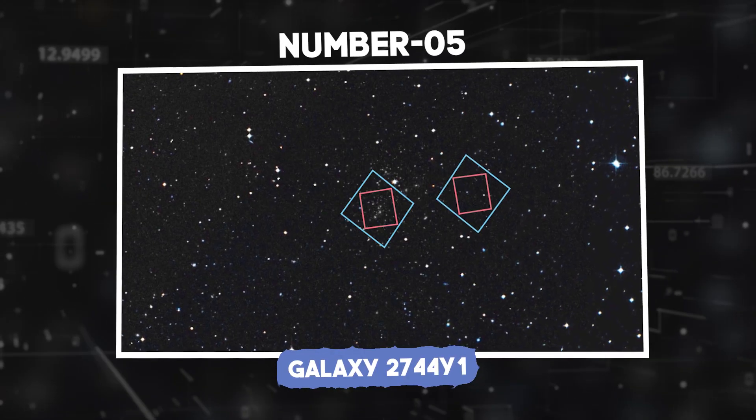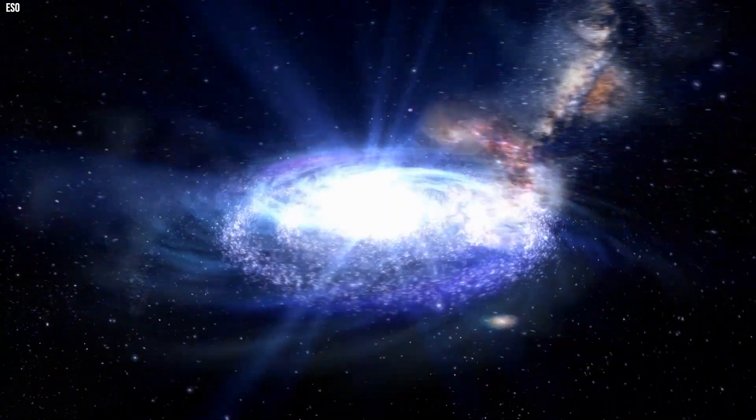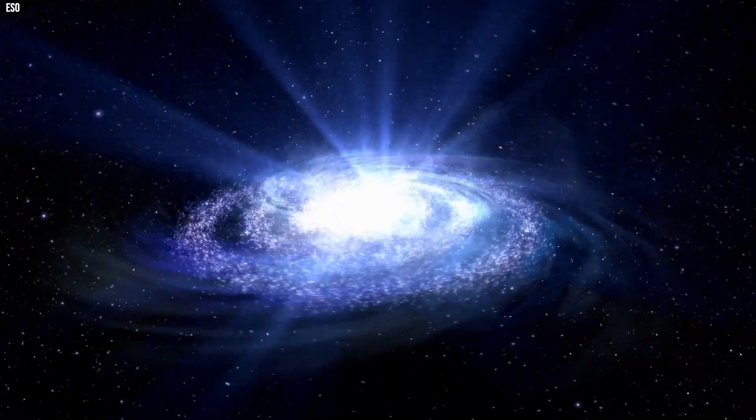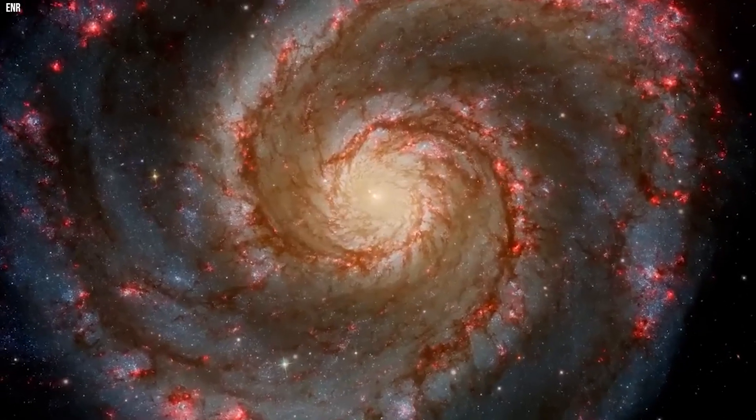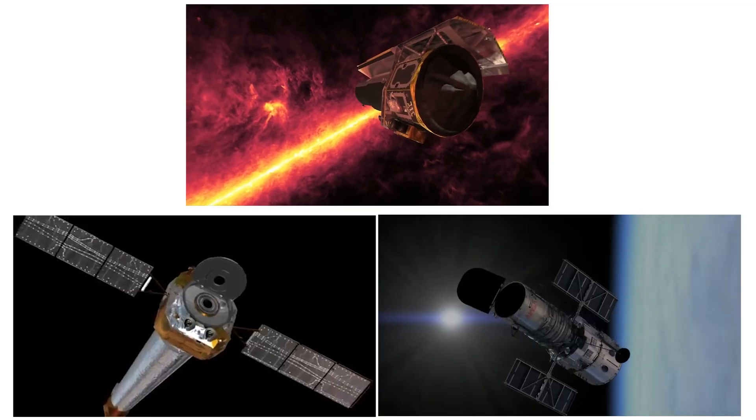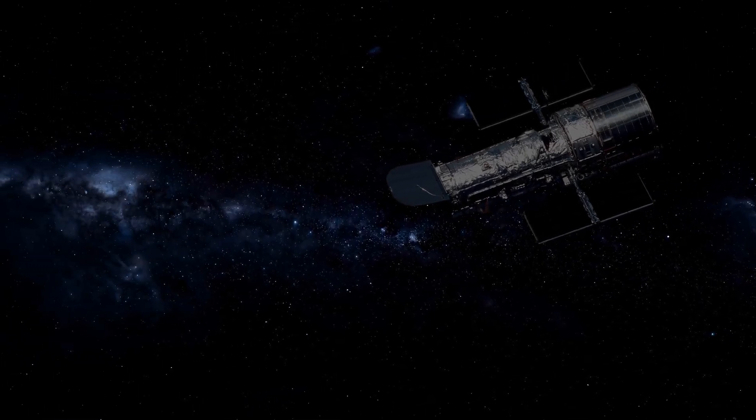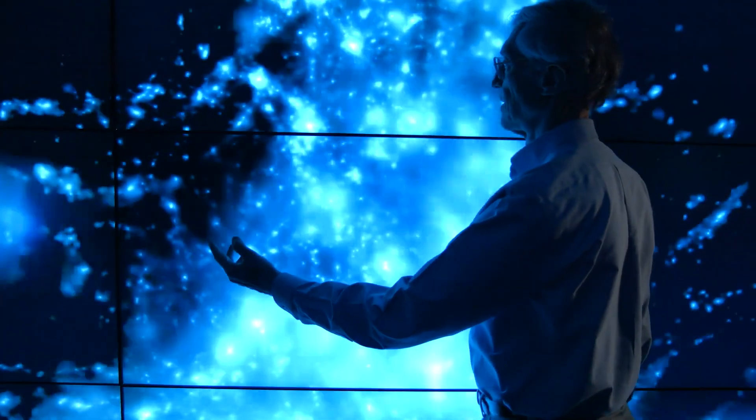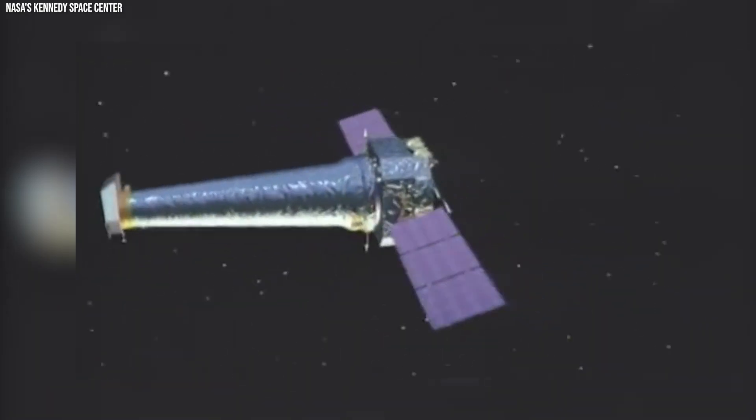Galaxy 2744Y1. Venturing further into the cosmic frontier, scientists have uncovered the mysterious galaxy 2744Y1, positioned near the cosmos's edge. What sets this galaxy apart is not just its vast distance, taking a colossal 13 billion years for its light to reach us, nearly as old as the universe itself, but the groundbreaking collaboration of three powerful telescopes: Spitzer, Chandra, and Hubble. These telescopes, each capturing data from different wavelengths of light, provide astronomers with an unprecedented and comprehensive view of the universe that would be impossible with a single telescope.